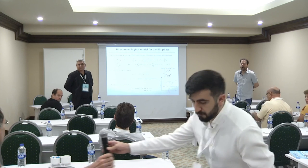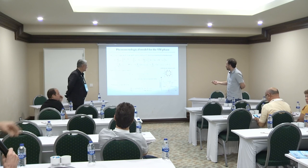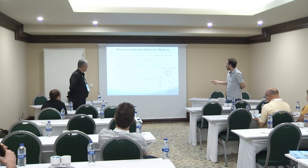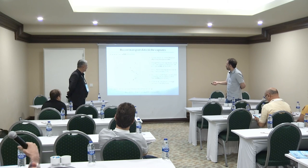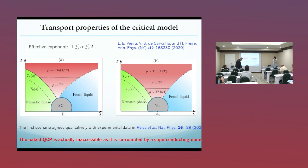A short question: let me go back to the phase diagram you were just showing. I am puzzled — when you are in this area above the quantum critical point, you show different laws for resistivity. But what is the intrinsic energy scale? Why should it change from one to the other? I don't see anything obvious.